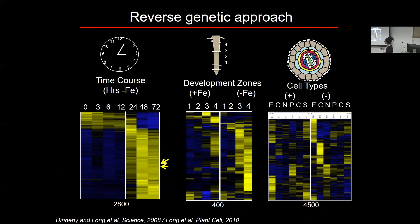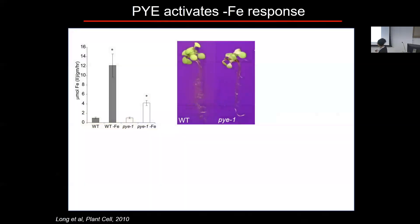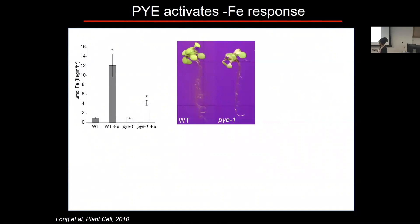From that approach, we identified two genes that form the basis of my lab to this day. One we named Popeye. Popeye mutants show decreased ferric reductase activity and decreased ability to acidify the rhizosphere. Using a bromocresol purple assay, we can image the pumping of protons and the change in pH on pH indicator media. In contrast to wild type, Popeye mutants show decreased rhizosphere acidification.